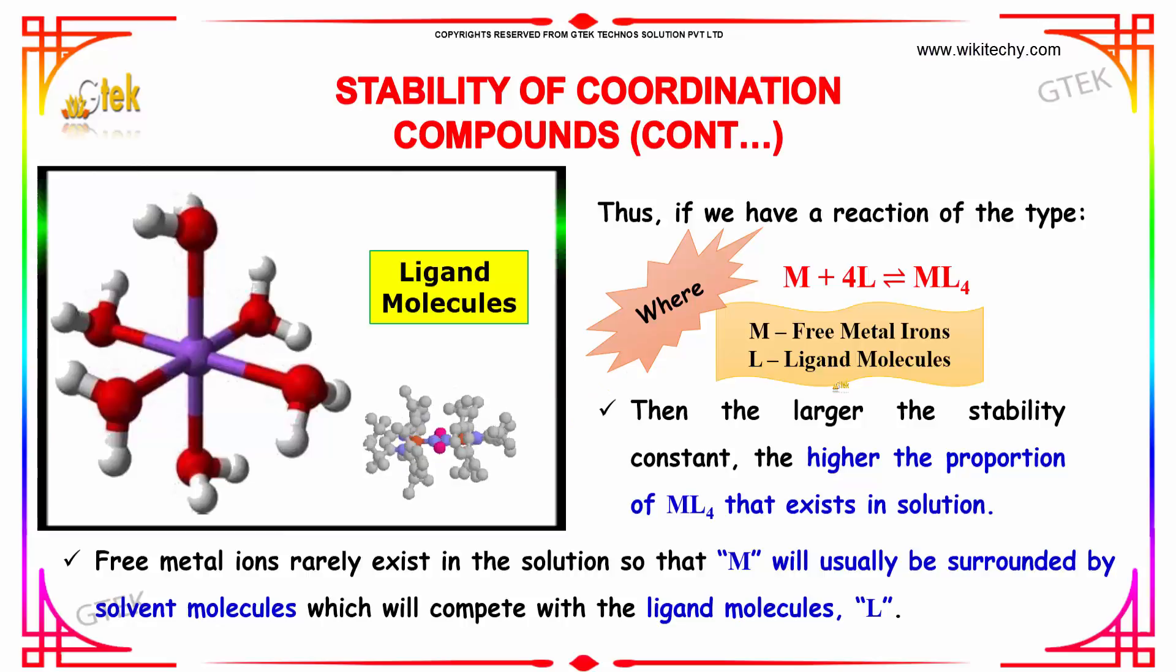Thus, if I have a reaction of the type, a metal with 4L, 4 ligand molecules, will form a metal with ligand ML4. Then the larger the stability constant, the higher the proportion of ML4 that exists in the solution.